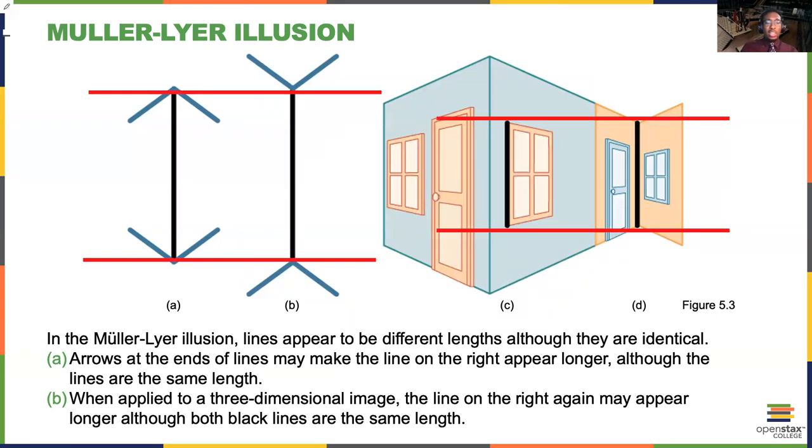On this slide I've put some red lines that are parallel to show that the black lines in both of these cases are exactly the same length. This is known as the Müller-Lyer illusion in which lines appear to be different lengths even though they're actually identical. Over here the arrows at the end of the lines these kind of blue arrows make the line on the right look longer than the one on the left even though they're actually the same length. Our minds are tricking us using the contextual information around the black lines to make us think that B is longer than A.